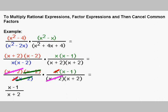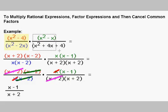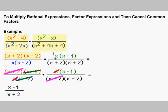In this next example, we're going to multiply rational expressions. Here we're going to multiply x squared minus 4 over x squared minus 2x times x squared minus x over x squared plus 4x plus 4. Our first step, just like in the last problem, is to factor all rational expressions. x squared minus 4 factors as x plus 2 times x minus 2 — difference of squares. x squared minus x factors as x times x minus 1. x squared minus 2x factors as x times x minus 2. And x squared plus 4x plus 4 factors as x plus 2 times x plus 2.